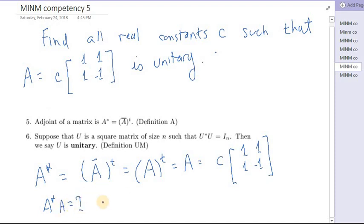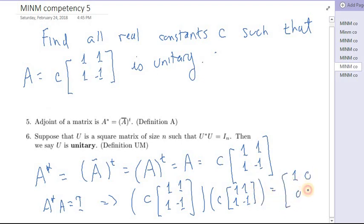That's the same thing as saying C times [1 1; 1 -1] times C times [1 1; 1 -1] is equal to the identity [1 0; 0 1]. Okay, let's put the brackets here.